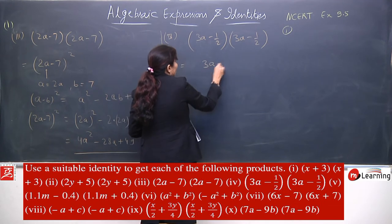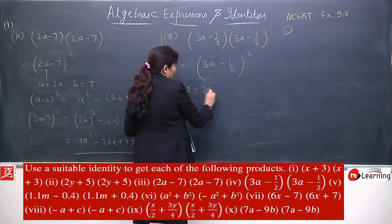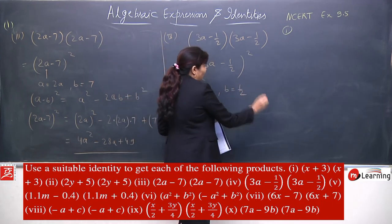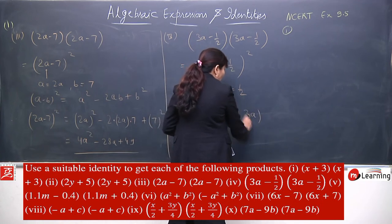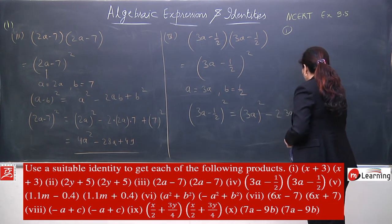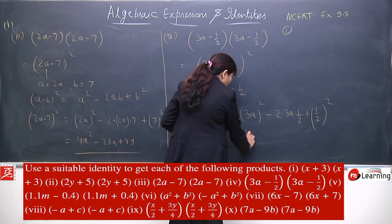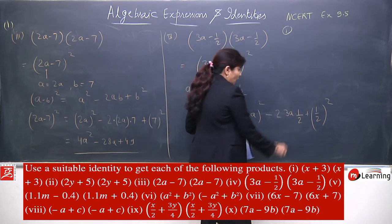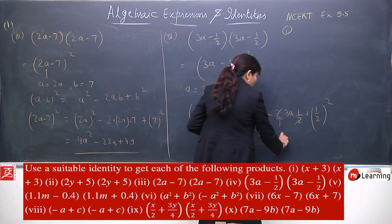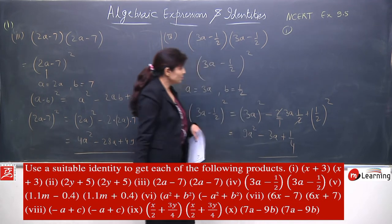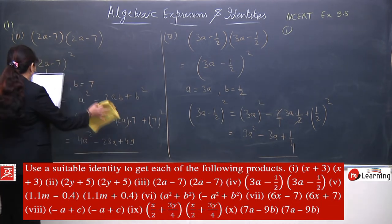Now 4th is (3a minus half)(3a minus half) — which is (3a - 1/2) whole square. The formula will apply. In place of a we clearly have 3a, and in place of b we have half. Applying a minus b whole square = a square minus 2ab plus b square. (3a)² is 9a square. For 2ab: the 2 in the denominator of 1/2 cancels with the 2 in front, leaving 3a. Plus (1/2)² is 1/4. So (3a - 1/2)² = 9a² - 3a + 1/4.